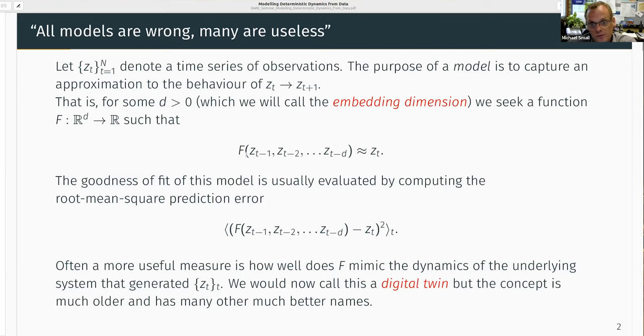To do that, I can drive the model with a history of previous observations and use that to predict the future observations. I'm seeking a deterministic function of the past D observations, ZT minus one to ZT minus D, that give me approximately a prediction of the next observation ZT. And the way that almost everyone goes about doing this is that we will seek a function which minimizes the root mean square prediction error.